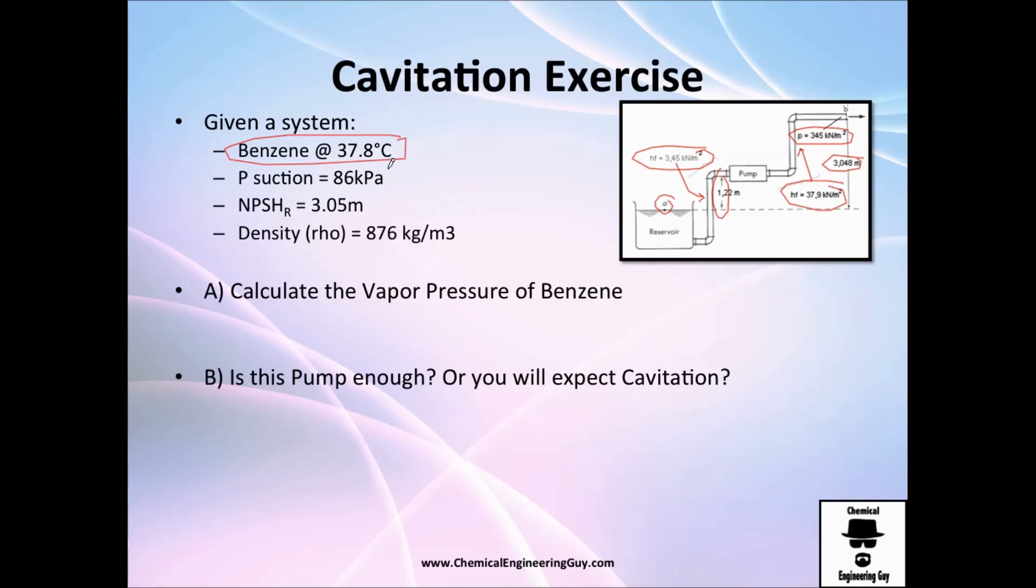They are very kind to give us the pressure in the suction line, which is interesting because normally they won't give it to you. Anyways, let's say this will always be the case. We have this pressure, pressure in the suction is constant, and the net positive suction head required for the operation of this pump is 3.05 meters. The density of this fluid, benzene, is 876 kg per cubic meter. So they tell you to calculate the vapor pressure of benzene, and once you have that, is the pump enough or will you expect cavitation?